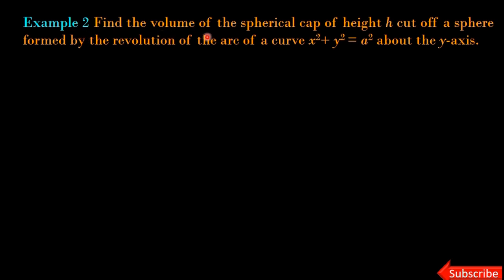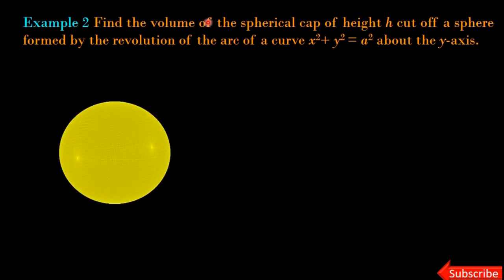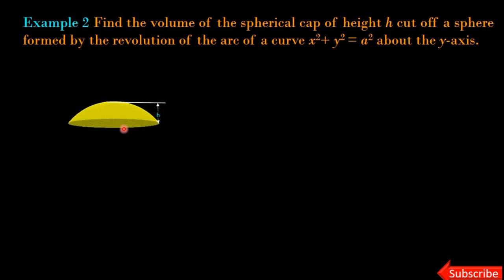Second example: find the volume of a spherical cap of height h cut from a sphere formed by the revolution of the curve x² + y² = a² about the y-axis. We want to make a spherical cap of height h cut off from a sphere. Suppose this is a sphere — we cut it at height h to obtain the spherical cap.